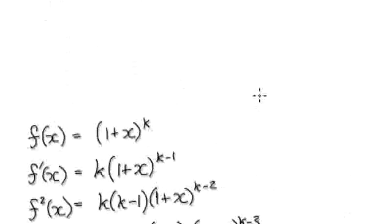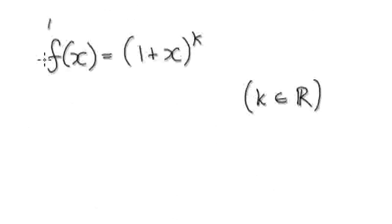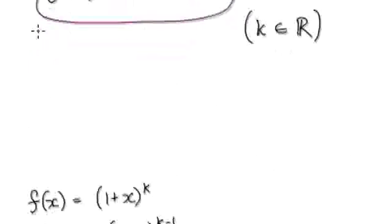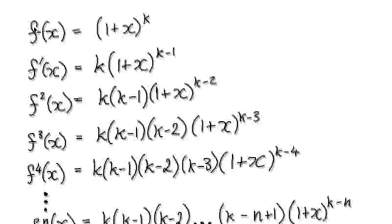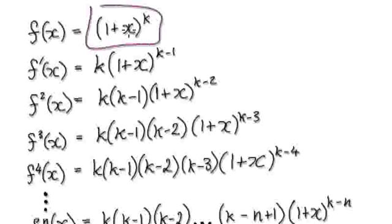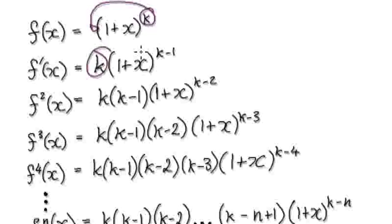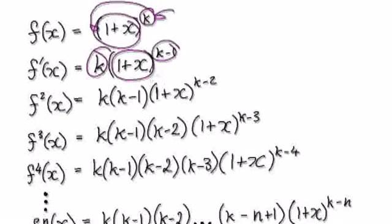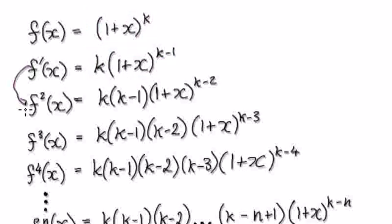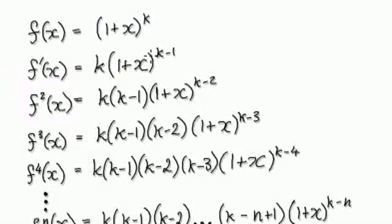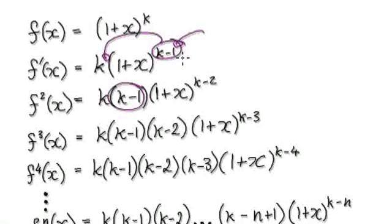Going back to the very beginning, we are trying to find the Maclaurin series for this function. It starts out with your function. Now differentiate it to find the first derivative. Differentiating this, the k will come down, that would give you this — the bracket stays intact and then the power gets minus by 1. Then to find the second derivative, differentiate it again. This term comes down, the power gets minus by 1.